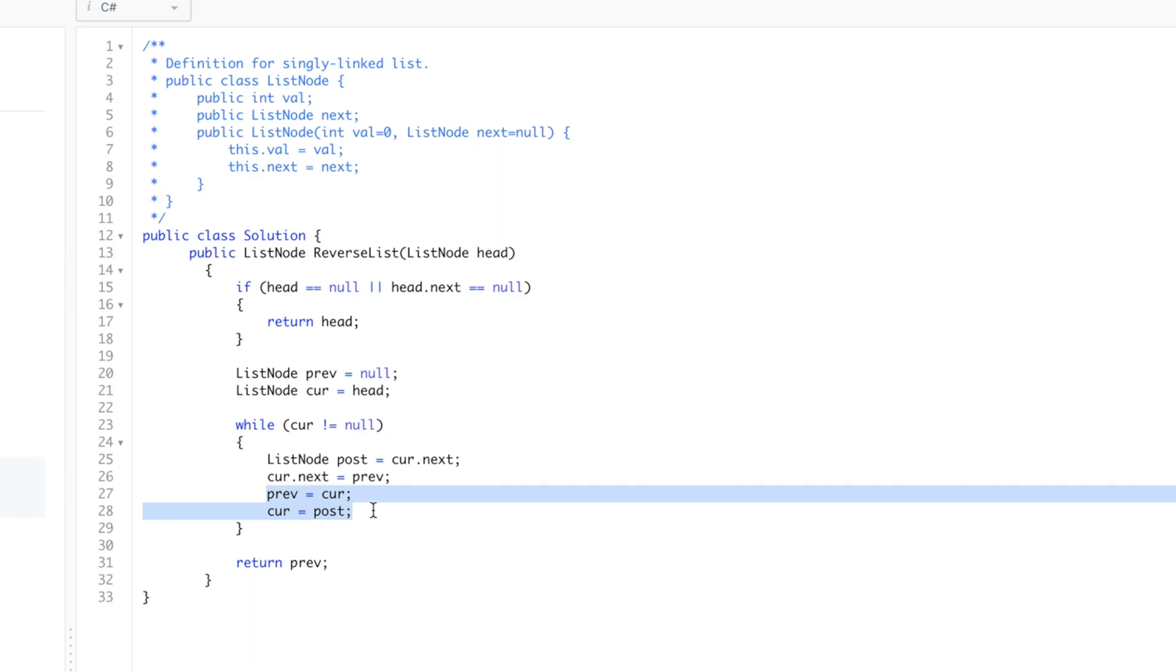Then we reset the values which will be used in the next iterations. This iteration will continue until the current is not equal to null. Once the current node is null, it will jump out and we will be returning the prev variable.